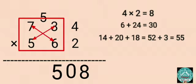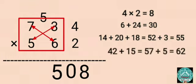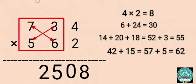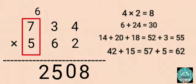Step 4: Multiply 7 by 6 and 5 by 3, then add: 42 plus 15 equals 57. Add 57 and 5 that's carried forward: 57 plus 5 equals 62. Write 2 before 5 and carry forward 6.